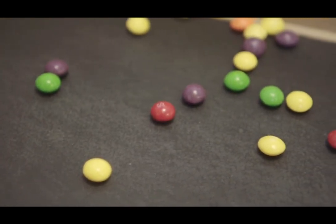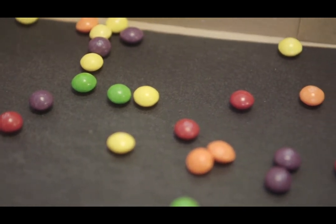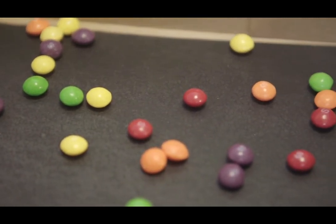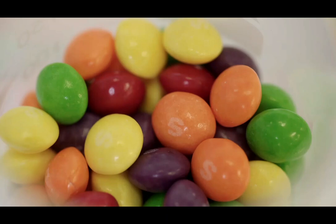Radioactive decay can be modeled surprisingly accurately using sweets to represent individual atoms of a radioactive substance. Radioactive decay occurs when either energy or particles are emitted from the nucleus of a radioactive atom.